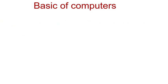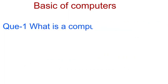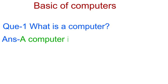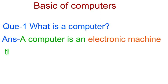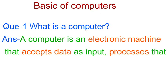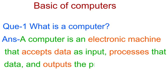Now let's do some basic questions. Question number one: What is a computer? Answer: A computer is an electronic machine that accepts data as input, processes that data, and outputs the processed data.